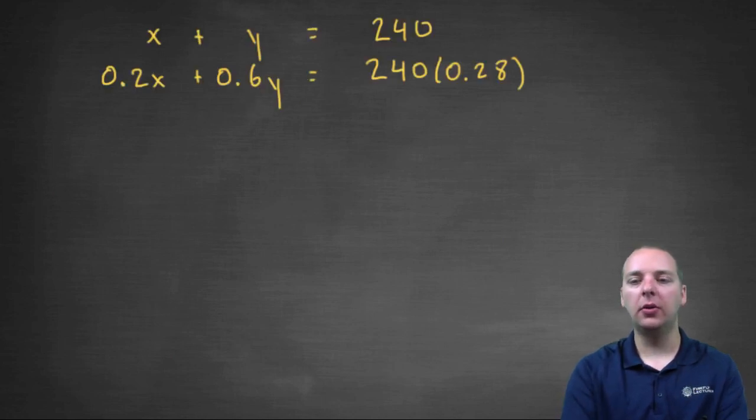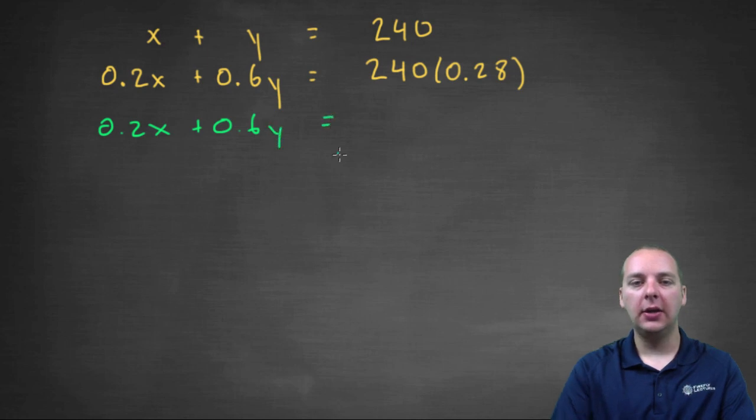Here I've rewritten it just so we can work on it a little bit. You can use the substitution method if you want. You can use the elimination method or addition method if you want. I wouldn't graph it, but I think one of the other two methods is perfectly fine. I think I'll do the substitution method. Whenever possible, that's usually the easiest. So let's see, first thing I think I'll do is I'll multiply this here. So I have 0.2x plus 0.6y equals, we'll take 240 times 0.28, and on your calculator you'll get 67.2.